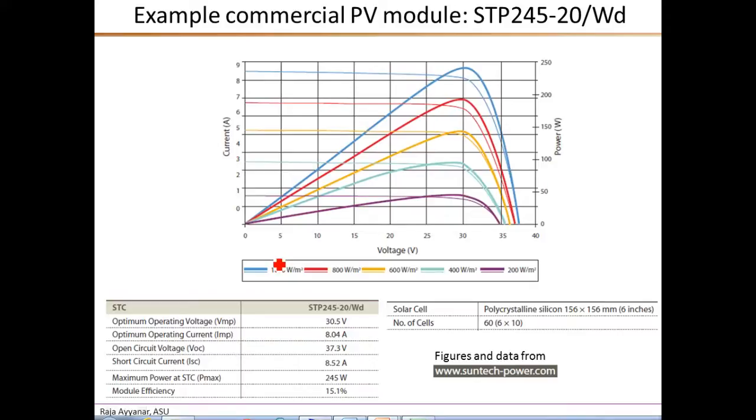The data sheets also give the currents and voltages at three salient operating conditions. So the first condition is the open circuit condition. So the open circuit voltage VOC here is 37.3 volts. So the current, of course, under open circuit is zero. The second salient condition is the short circuit condition. So the corresponding short circuit current ISC is 8.52 amperes. And of course the voltage is zero under this condition.